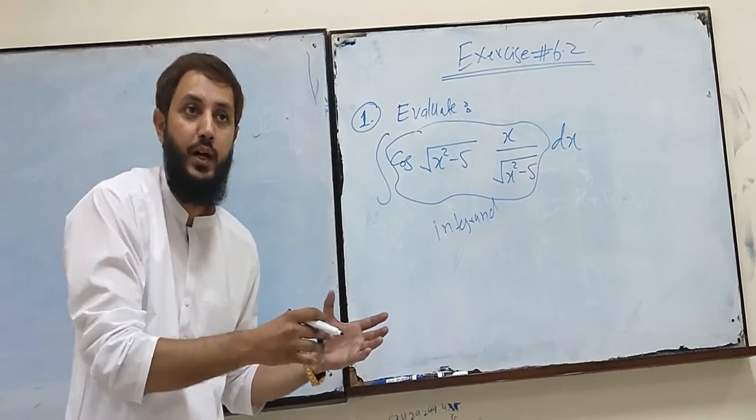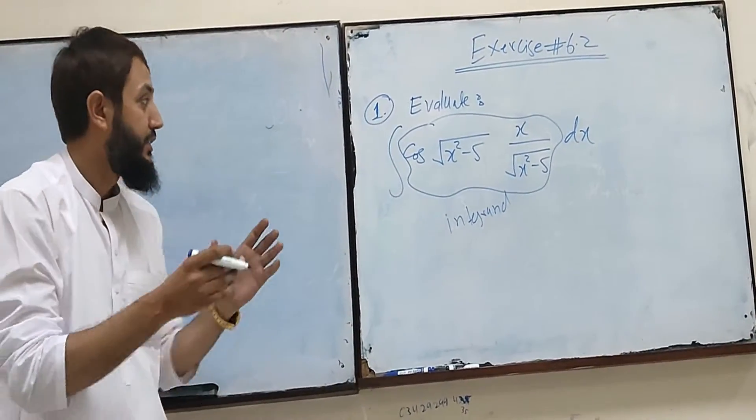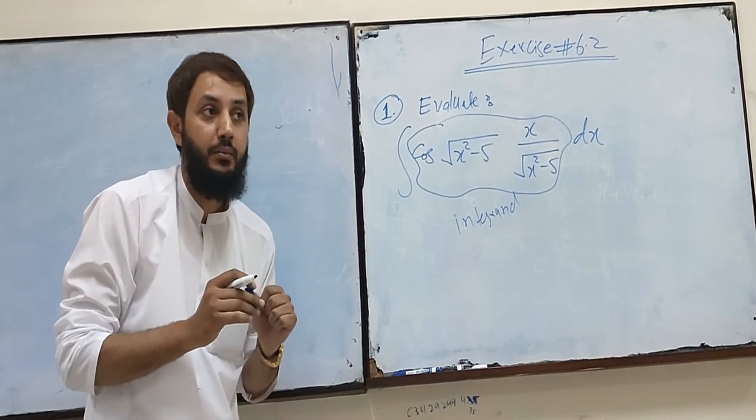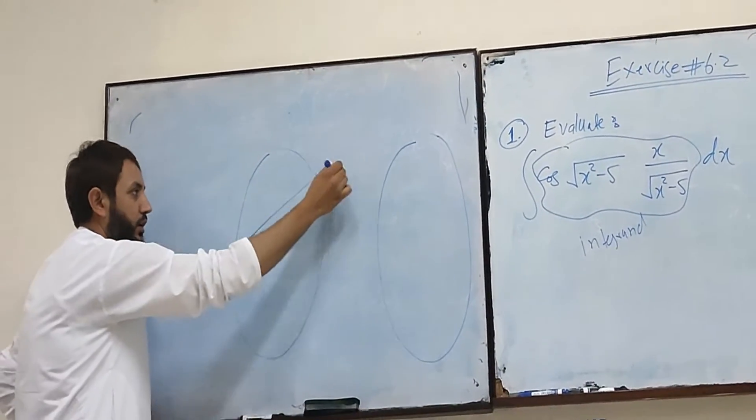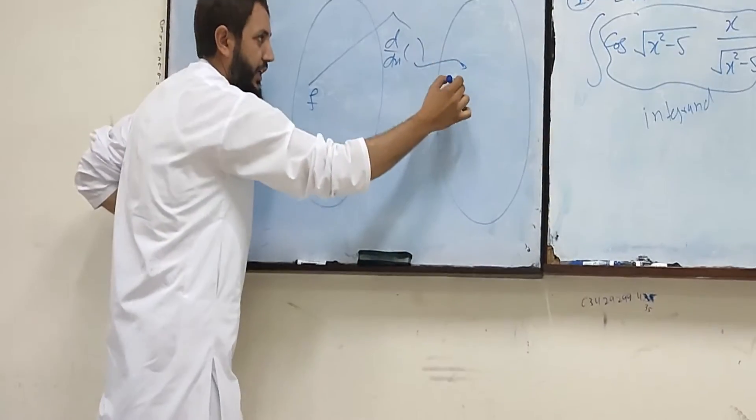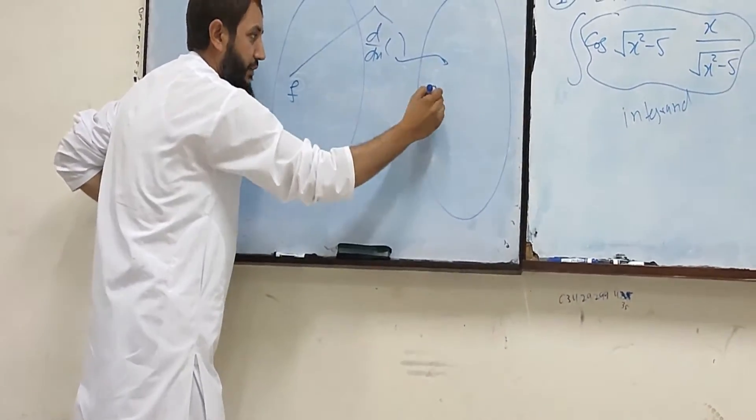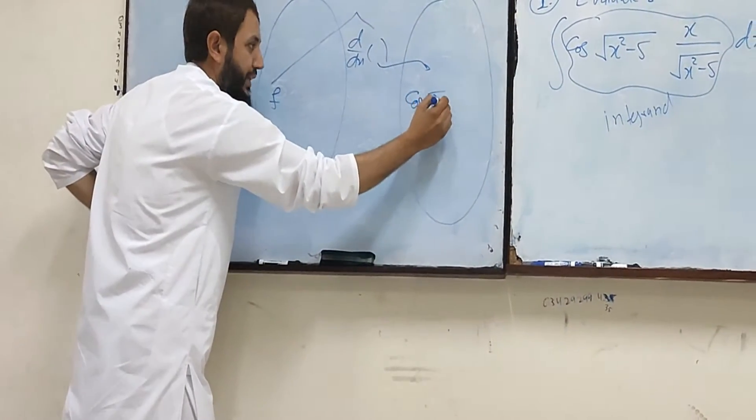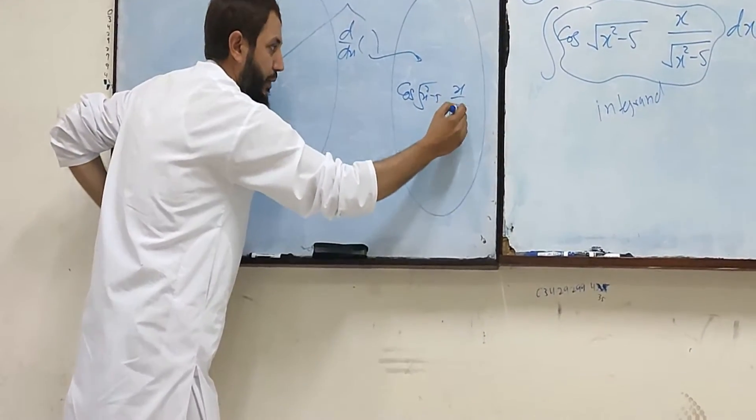We need to get the output. This is a diagram that happens in integration. We have some functions, some unknown functions. They will find out the derivative. That is the basic derivative: x square minus 5.